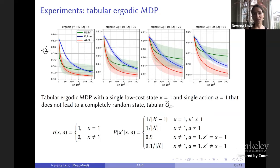Finally, I'll show some experiments. This first set of experiments are on a simple tabular ergodic MDP where we can implement everything exactly. This environment is very stochastic, so we don't need much exploration. The different plots correspond to different numbers of states and actions. Here I compared Polytex, AAPI, and another algorithm called RLSVI which randomizes value function parameters. Here it seems this adaptive regularization helps AAPI converge faster than Polytex.